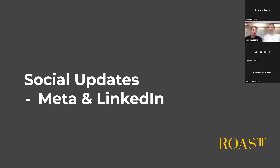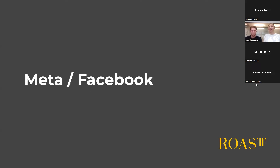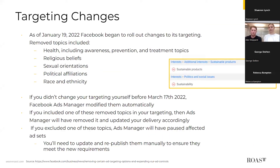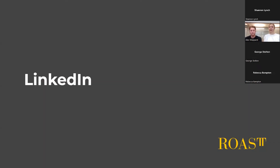Looking at updates to Meta and LinkedIn: Facebook rebranded as Meta in October, which had no real impact for advertisers, but has since announced changes to its targeting. Rolled out over approximately four months, Facebook removed targeting options towards certain groups including health awareness, prevention and treatment topics, religious beliefs, sexual orientations, political affiliations, and race and ethnicity. If you didn't change your targeting before March 2022, Facebook Ads Manager modified them automatically — removing the targeting option or pausing all affected ad sets for excluded topics, requiring you to update and republish them manually.